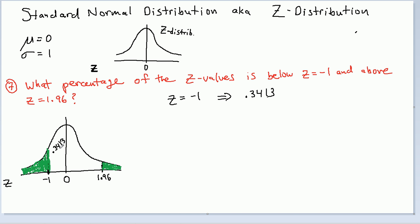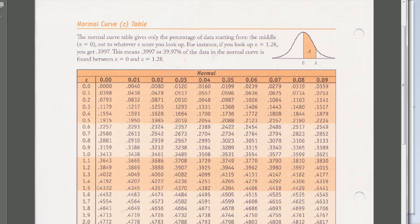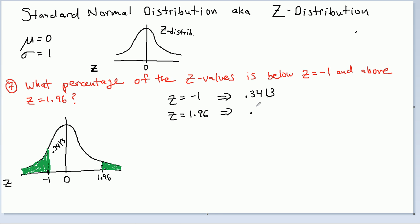That's not what we want, but it's definitely on the way to what we want. We look up Z equals 1.96 and we get 0.475. By the way, remember that the area under the entire curve is 1 or 100%.